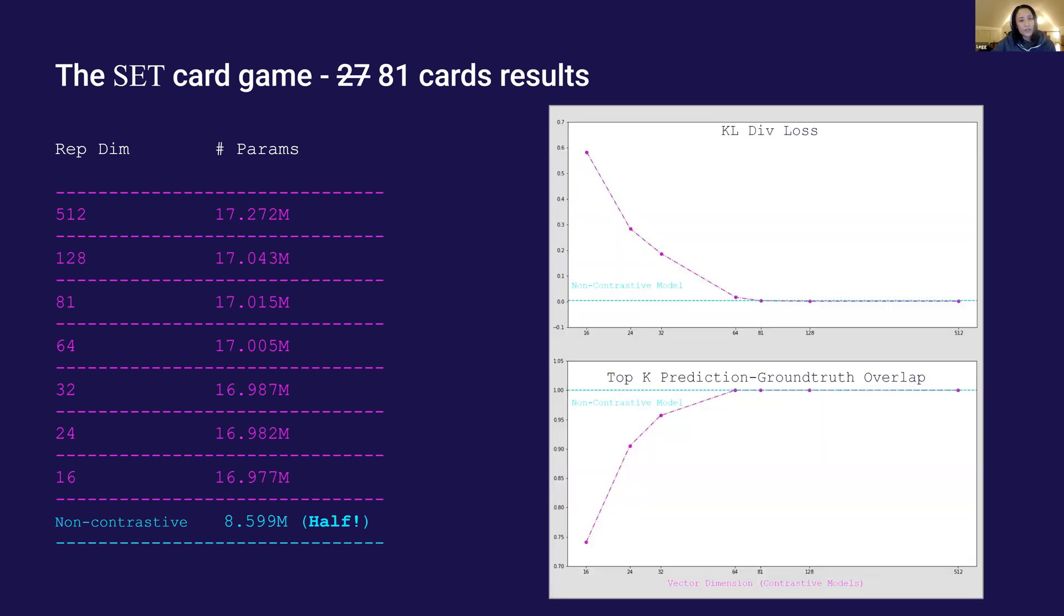Here are the plots. The trends are similar. KL loss decreases as the vector dimension increases and top K overlap metric increases with the vector dimension.